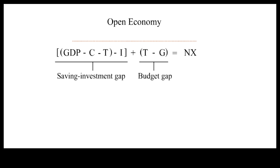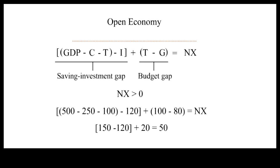When exports exceed imports, NX will be positive. How might this positive NX come about? Let's substitute some numbers into the equation. Say GDP is 500, C is 250, T is 100, I is 120, T is 100 again, G is 80. So, it turns out the positive NX is generated by a positive saving-investment gap and a budget surplus.